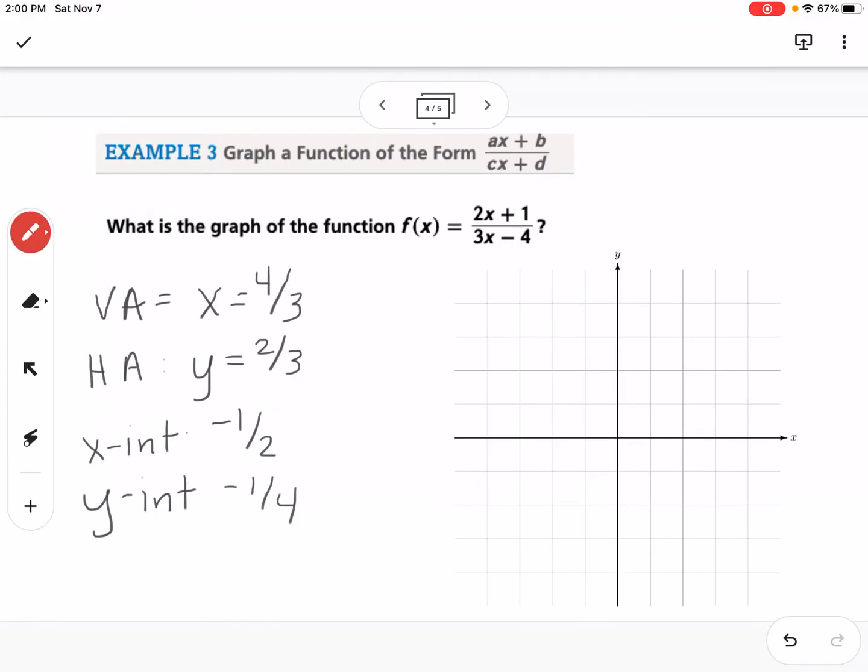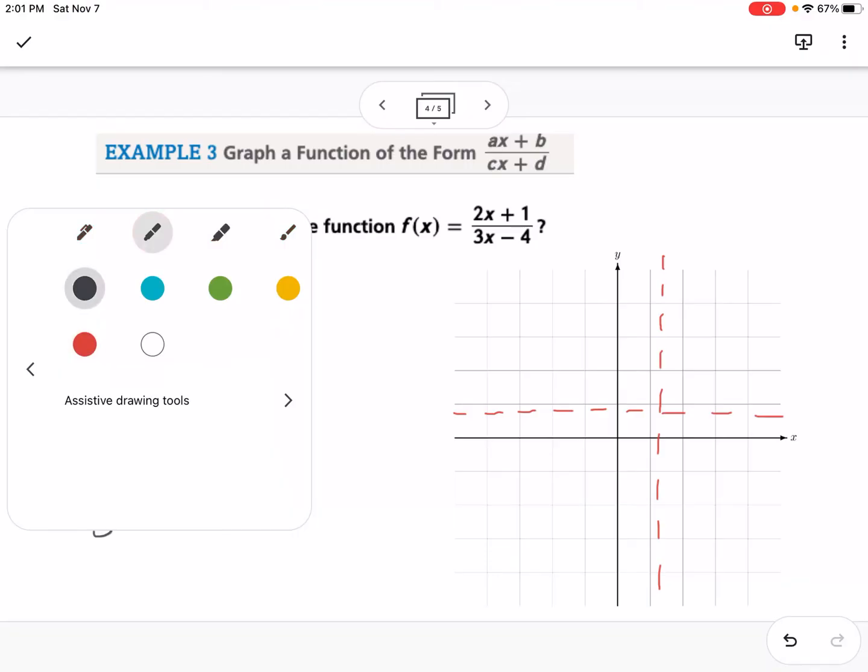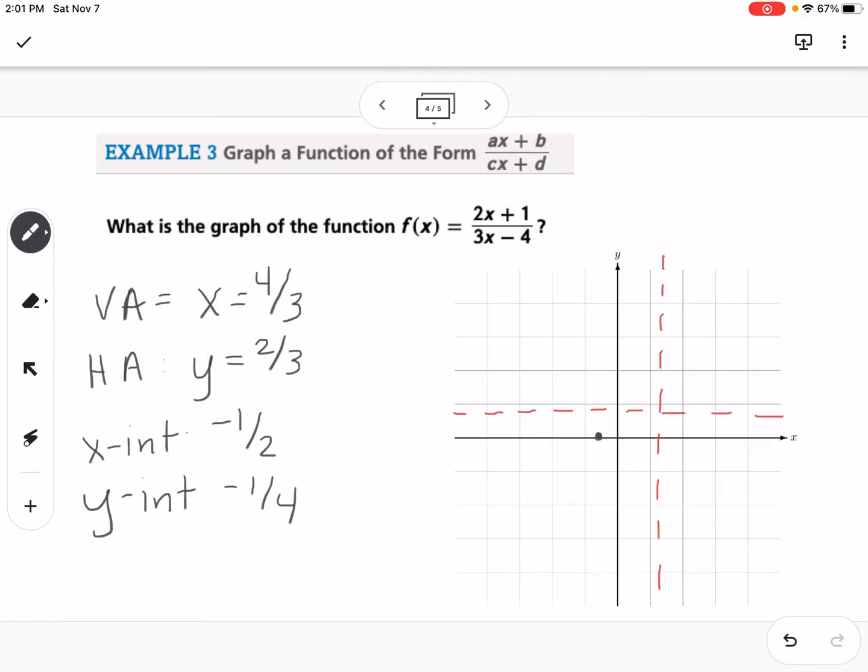I'm going to use a different color for the asymptotes. 4 thirds is a little bit past 1, that would be 1 and 1 third. My horizontal asymptote is 2 thirds. I have an x intercept at negative 1 half and a y intercept at negative 1 fourth. That's kind of enough to see what's happening on this side. Sometimes you might want to plug in a number on both sides of your vertical asymptote. The asymptotes guide the shape of the graph, so they tell us our end behavior and our behavior as we approach the vertical asymptote.